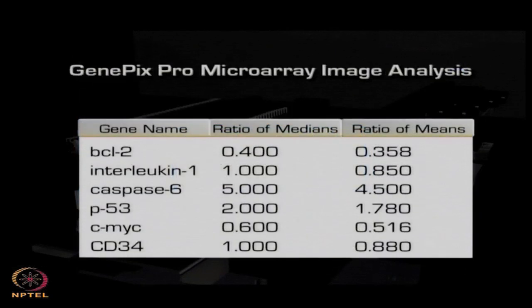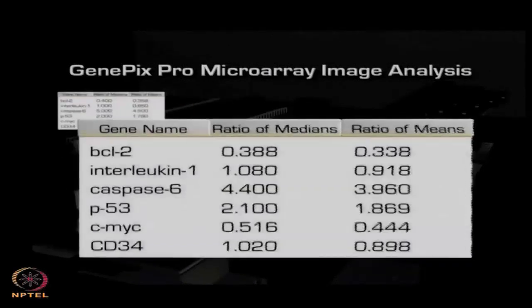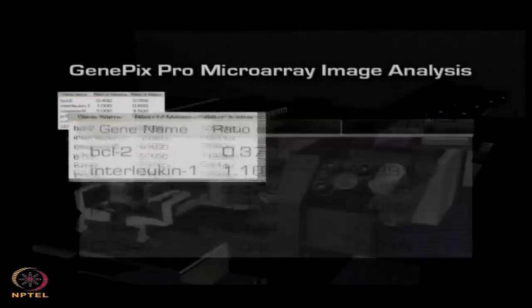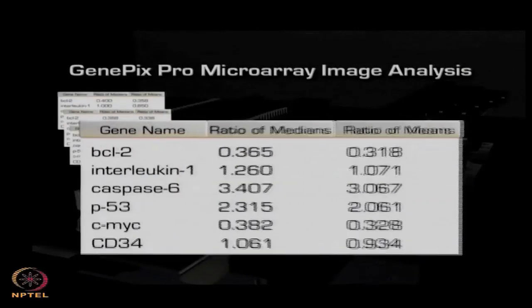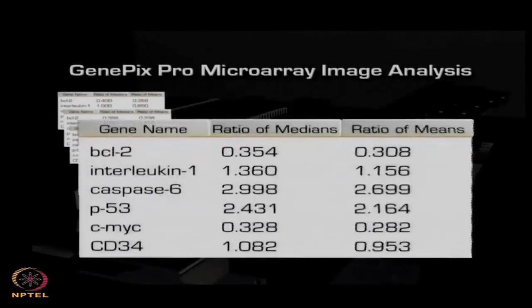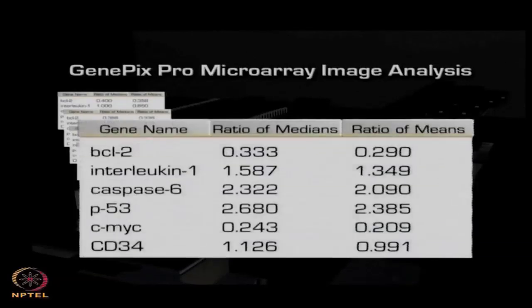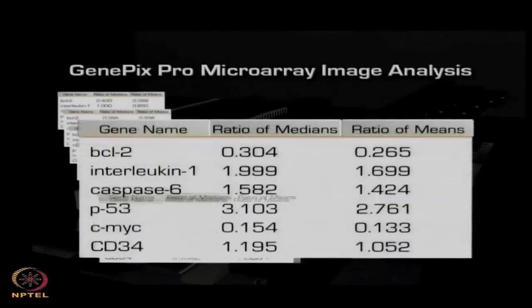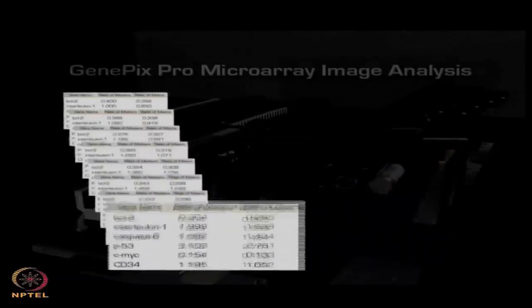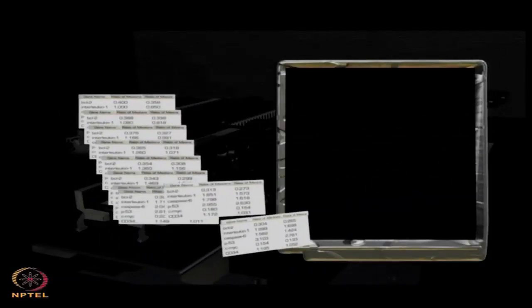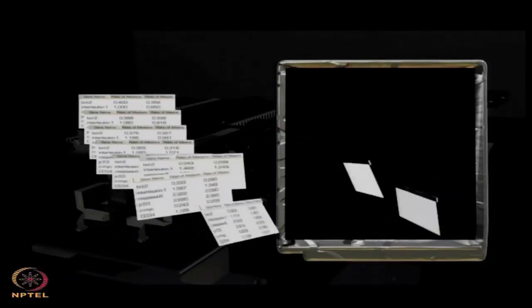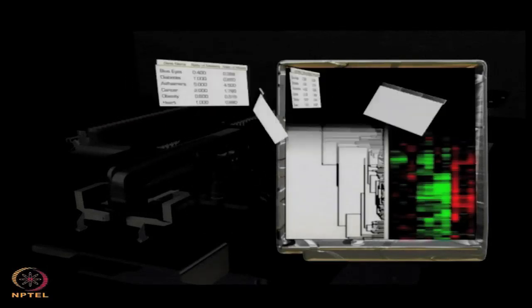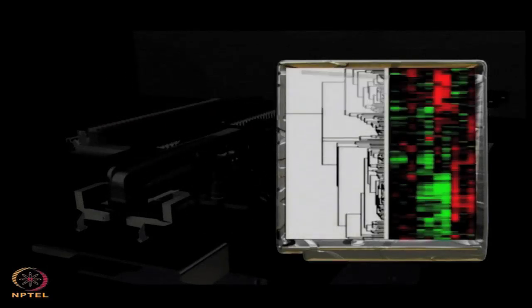GenePix Pro automatically finds the spots and calculates up to 108 different measurements for each spot. The results are saved as a GenePix Results or GPR file. GPR files can be saved automatically to the Acuity database for statistical analysis, clustering, and other advanced investigations.